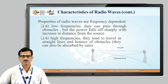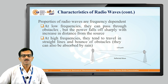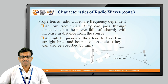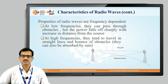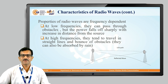Properties of radio waves are frequency dependent, covering bands like VHF, UHF, and many more. Different bands are defined because as the frequency changes, characteristics also change. At low frequencies, radio waves can pass through obstacles, but power falls off sharply with increasing distance from the source — higher wavelength means greater power falloff with distance. At high frequencies, waves tend to travel in a straight line and can also be absorbed by rain.